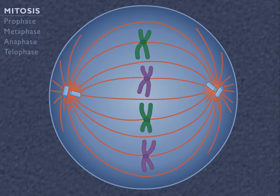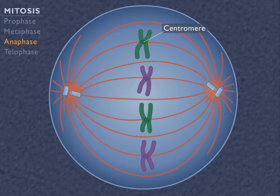Anaphase begins when the sister chromatids of each chromosome begin to separate. The centromere that holds sister chromatids together divides, and the chromosomes move away from each other along the spindle fiber.